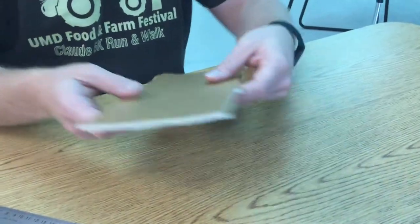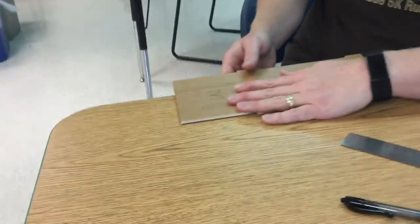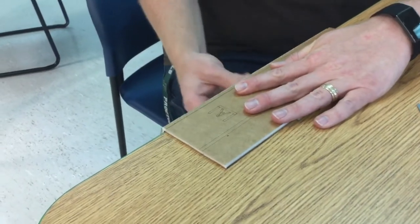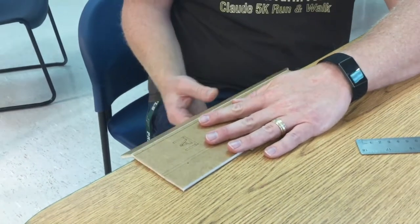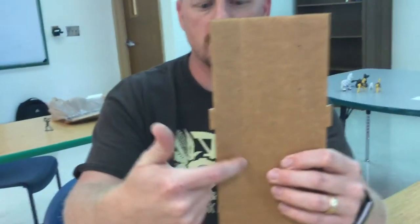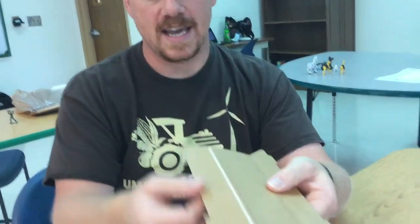At that point you can take it to the edge of a table and break it at that place that you cut. So you'll notice I didn't cut through this bottom paper because I want that to act as a hinge.